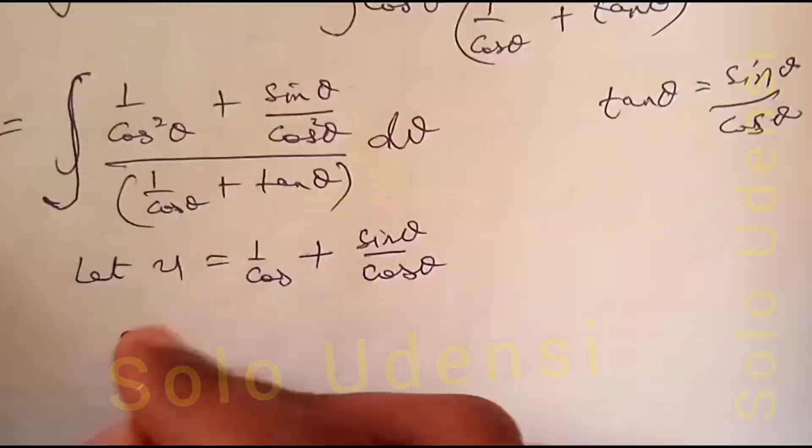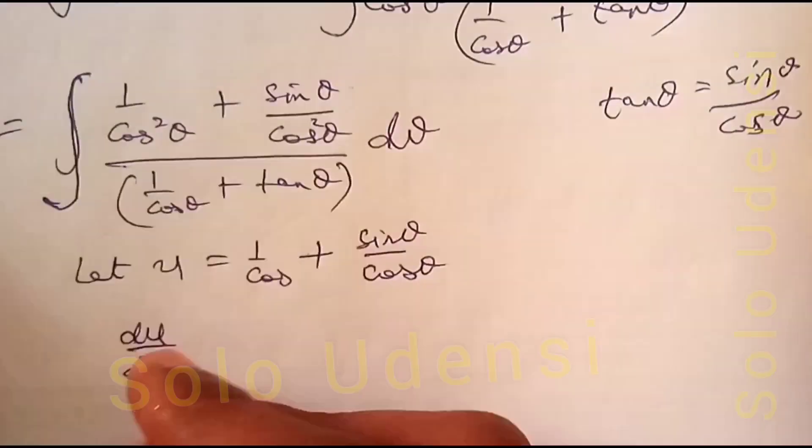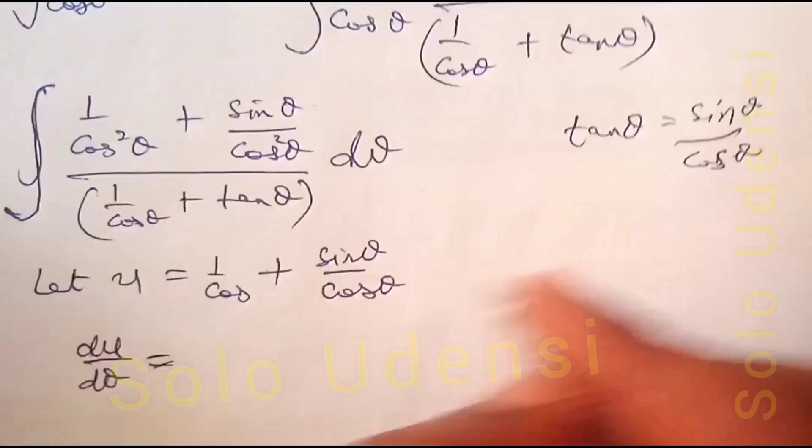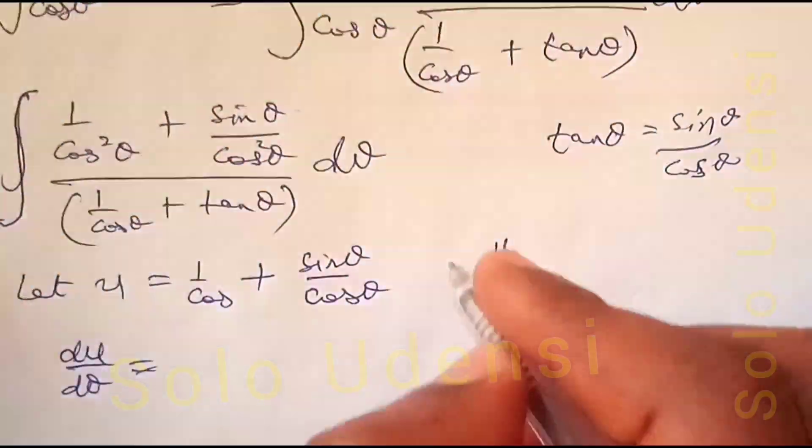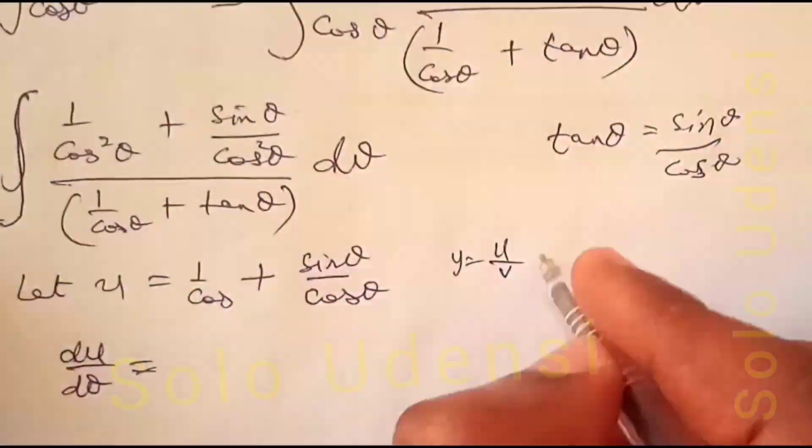So our du/dθ we will find using quotient rule. For y equals u over v,